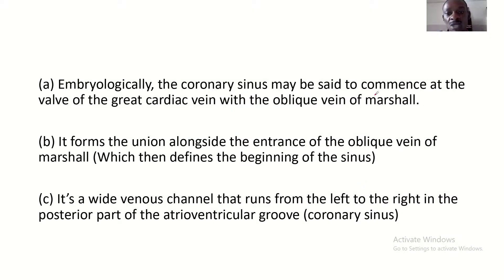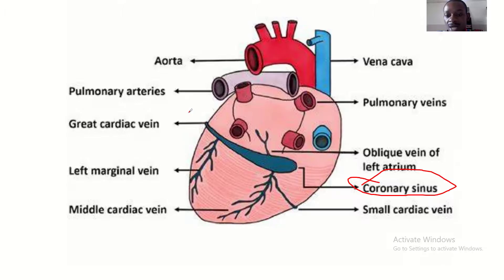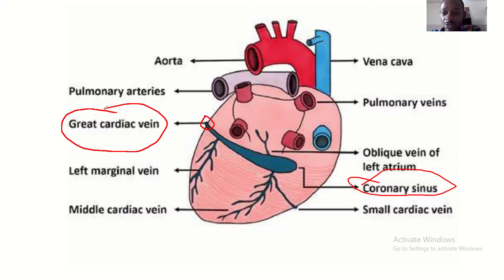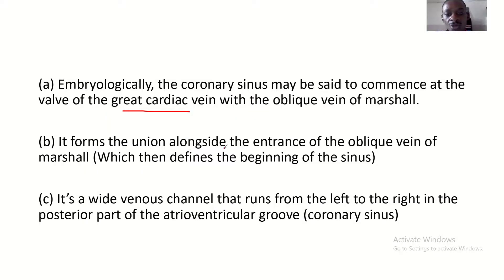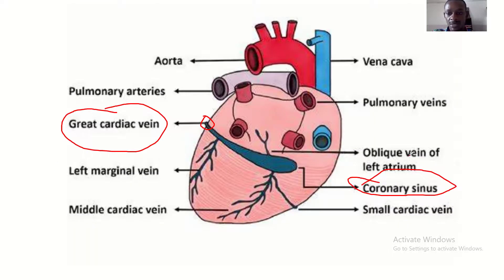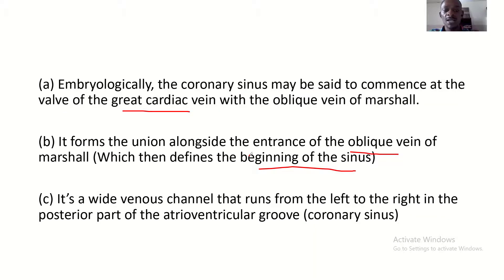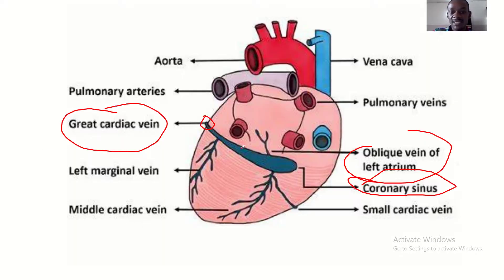Embryologically, the coronary sinus commences at the valve of the great cardiac vein, forming a union alongside the entrance of the oblique vein of Marshall, which defines the beginning of the sinus. The oblique vein of the left atrium — also called the oblique vein of Marshall — enters into the coronary sinus at this point.